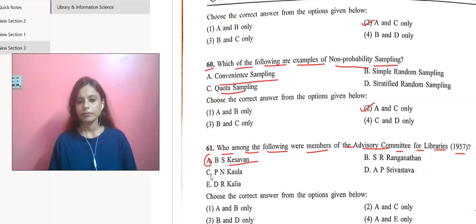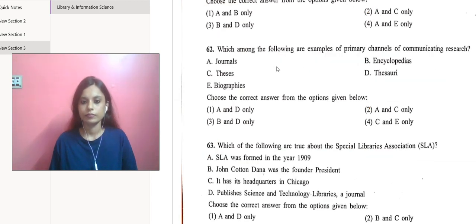The next question says which among the following are examples of primary channels of communicating research? Journals are there, these are the primary channels. Encyclopedias are there, theses are also there. Let's include A and C, it would be better.